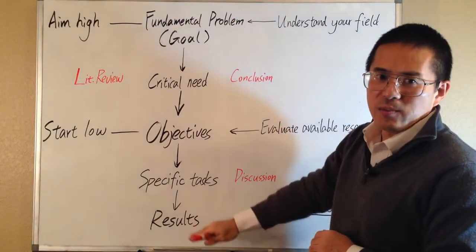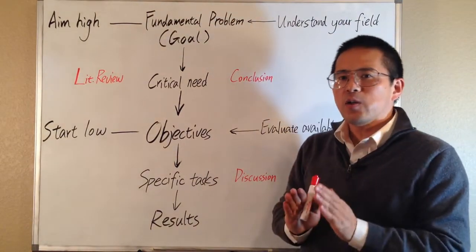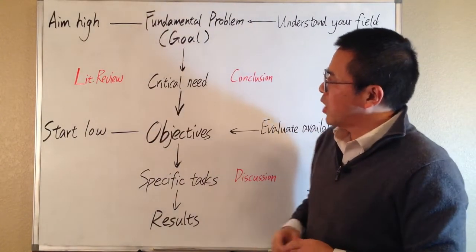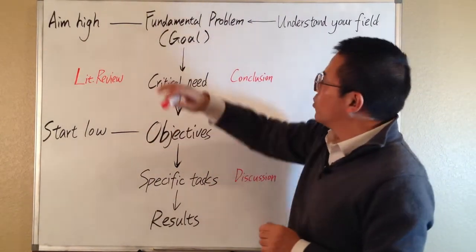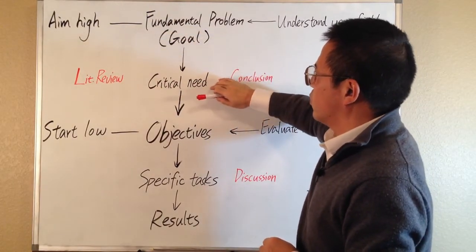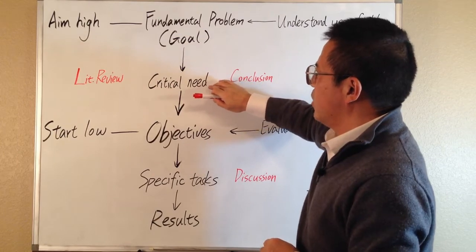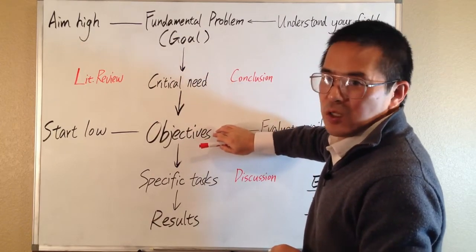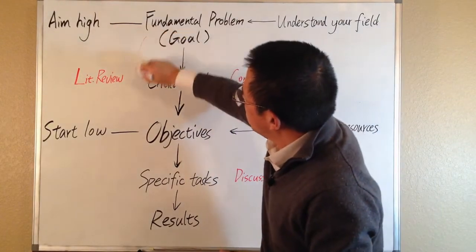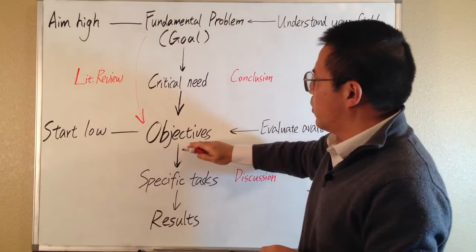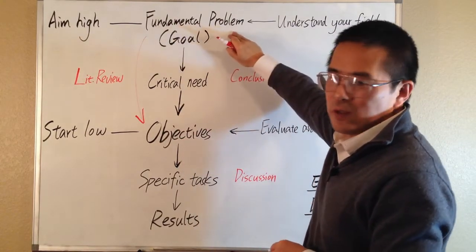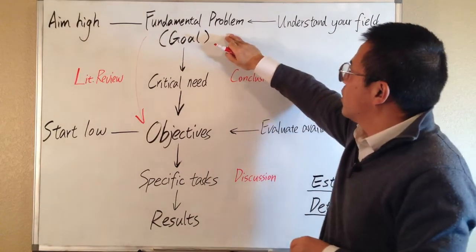The diagram here explains the typical structure of a research paper. In the literature review or the introduction section, you move from a fundamental problem to a specific critical need, and then you continue to move to a more specific research objective. And you prove to your reader that your proposed research objectives will make a solid contribution to the solving of a fundamental problem.